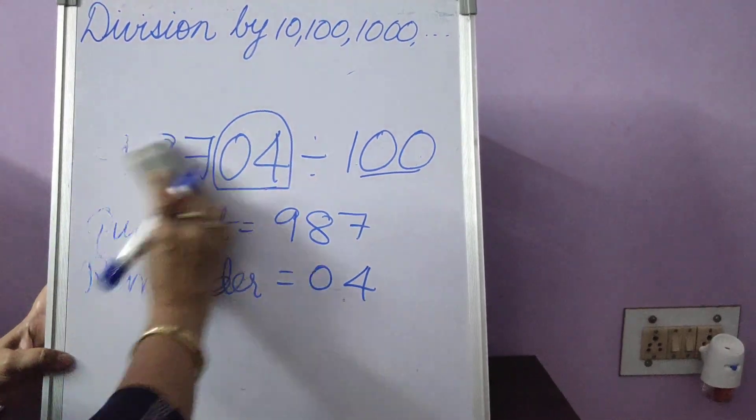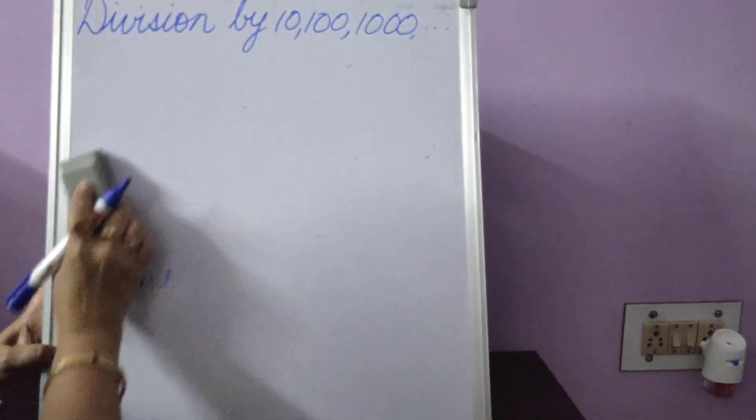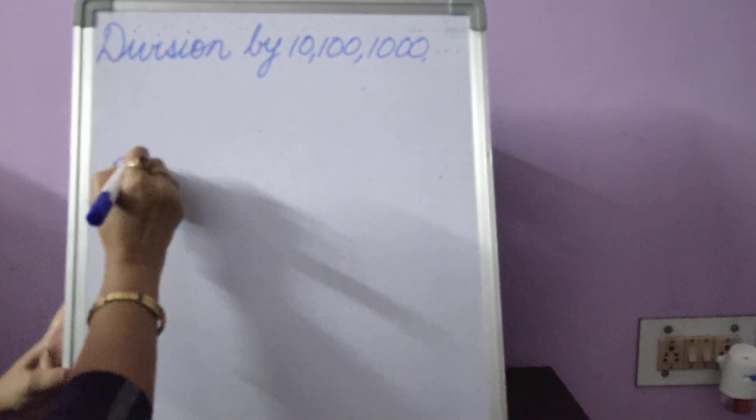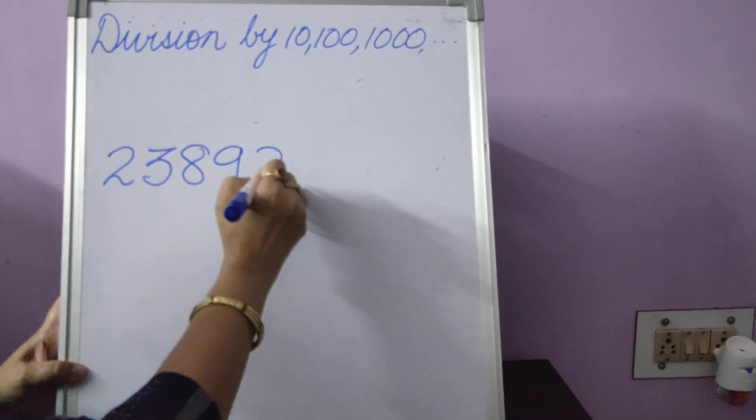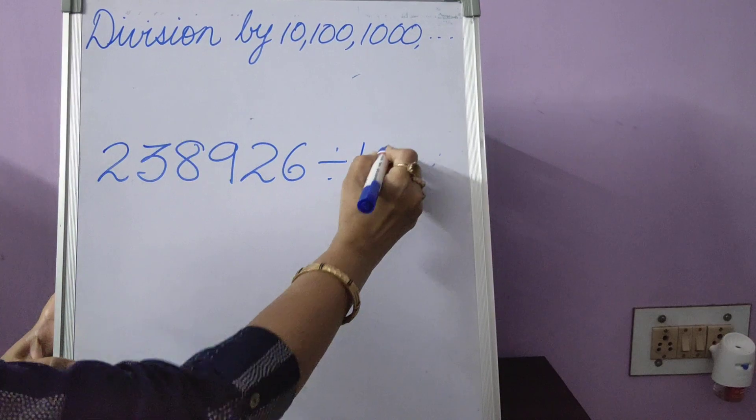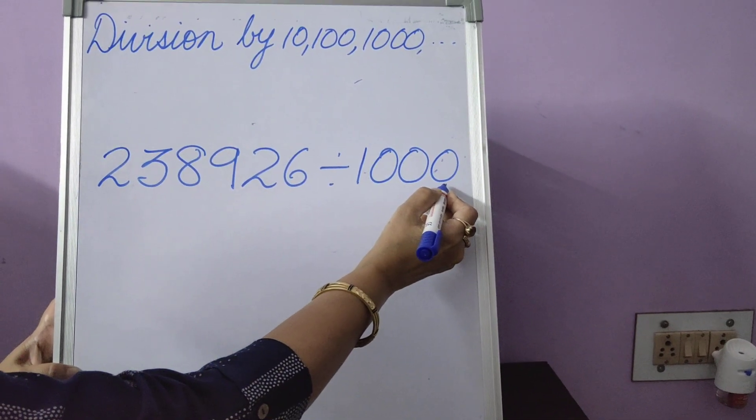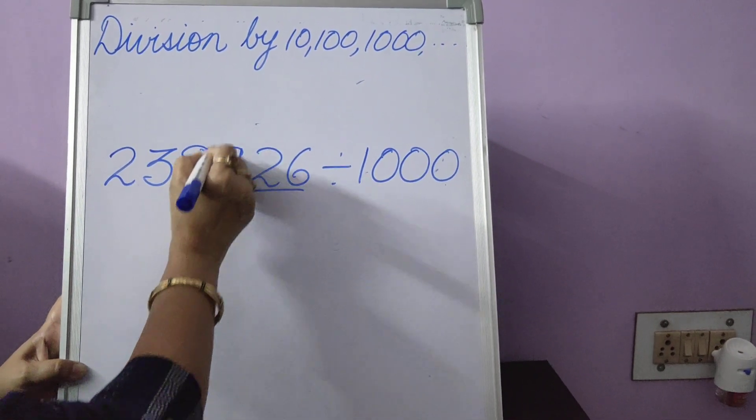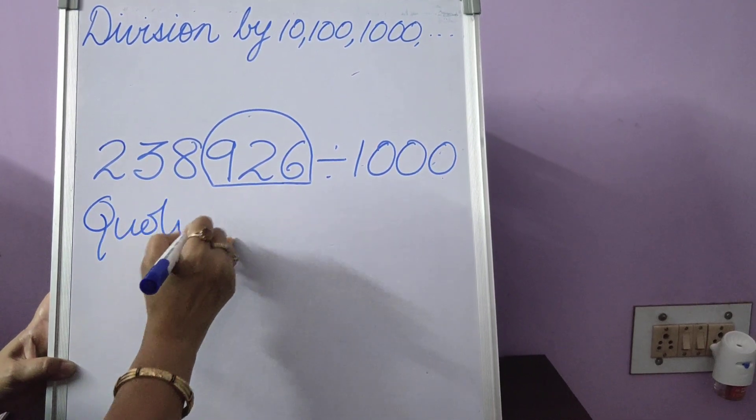And the same method again applies when we divide by 1000. 238,926 divided by 1000. 1000 has got how many places? Of zero, 3. 1, 2, 3. Count 1, 2, 3. Put it in a circle. What is outside is the quotient.